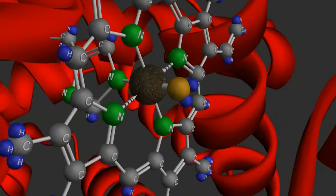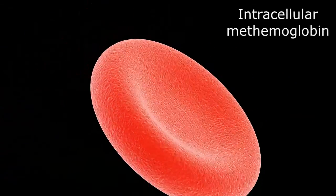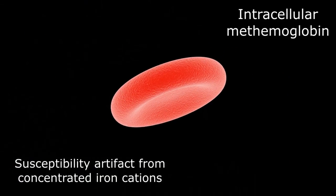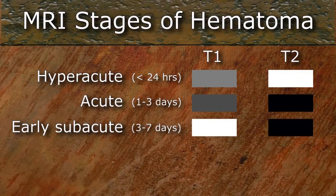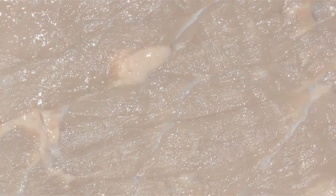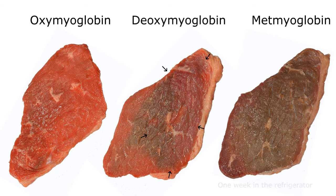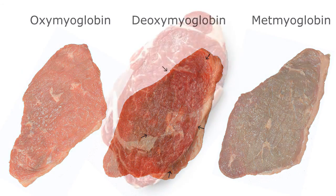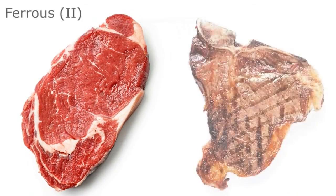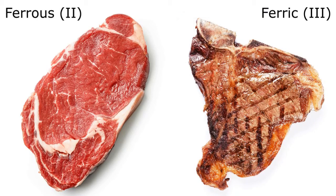Because the ferric iron is still concentrated within the red blood cell, the regional susceptibility artifact dominates on the long TE sequence, making intracellular aquamethemoglobin dark on the T2-weighted image. This steak is from the same package used to demonstrate oxy- and deoxymyoglobin — left in the refrigerator for about a week to demonstrate conversion to metmyoglobin. As you can see, the meat, even though still raw, has turned brown, reflecting the abundant metmyoglobin indicative of the aging process. Cooking the meat rapidly converts the iron cation from ferrous to ferric, thus the brown color of a well-cooked steak.